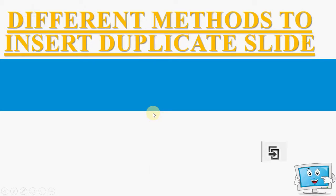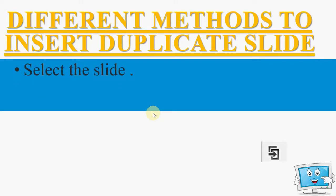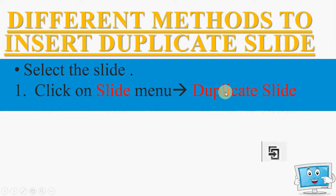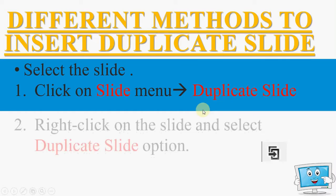First of all we have the different methods to insert a duplicate slide. Suppose we have a slide created and we want to take the same slide. So for that purpose we have to insert the duplicate slide. The steps are: first of all we have to select the slide, click on the slide menu, and choose the option duplicate slide.